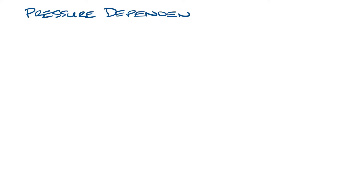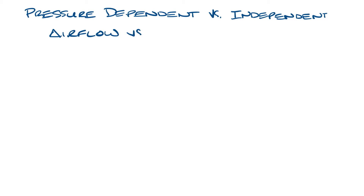Pressure dependence and pressure independence has to do with how the airflow through a VAV box reacts to changes in pressures in the system. As the name implies, in a pressure dependent box, the amount of airflow you get is dependent on the pressure in the system.